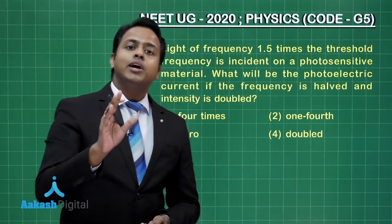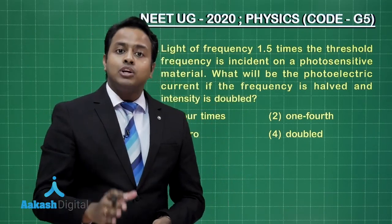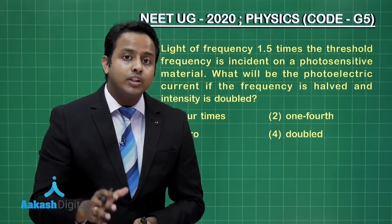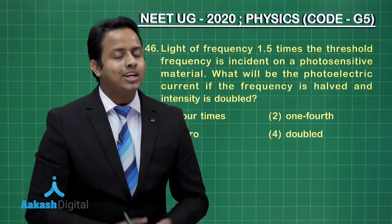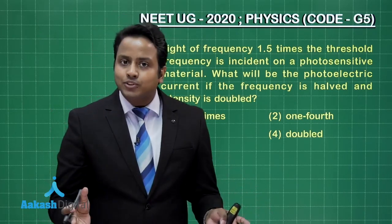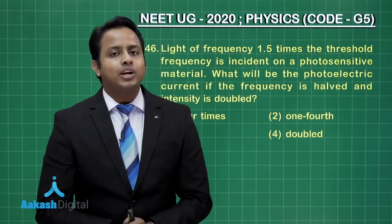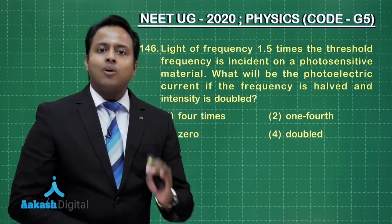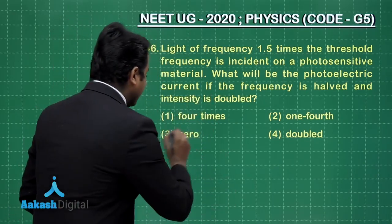Now, do you expect a photoelectron to eject from a material when you are incidental light which is having a frequency less than the threshold frequency? No. So, no photoelectrons will be ejected and no photocurrent would be present in this situation. So, that is a very tricky or a conceptual question and the answer is 0.